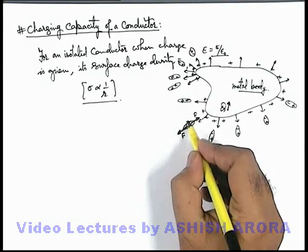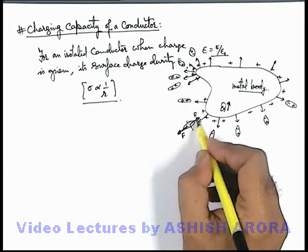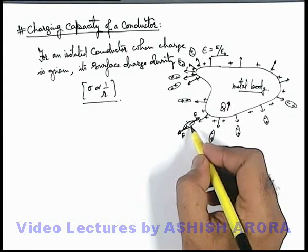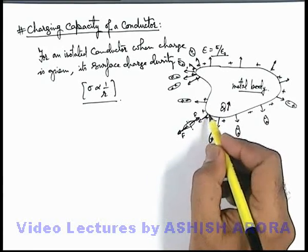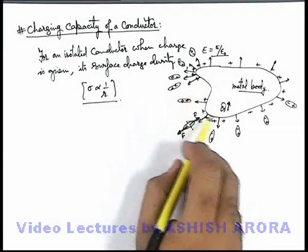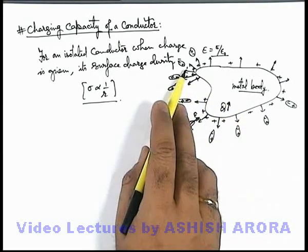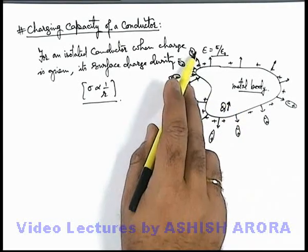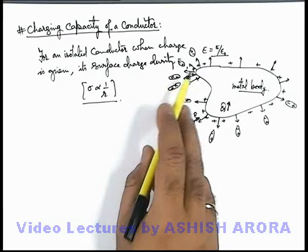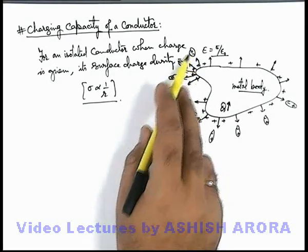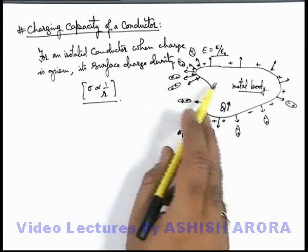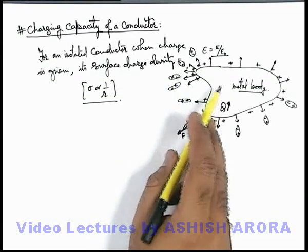Now as soon as the dipole breaks, the charges in the medium will become free to move, and the medium will also act as a conducting medium, and the charge of the conductor will leak out. We can say that as the electric field in the surrounding of the conductor is maximum just outside the sharp edges, the dielectric breakdown takes place first in the vicinity of sharp edges. The phenomenon of dielectric breakdown is basically the breaking of dipoles due to the electric field of the charged conductor in the medium.